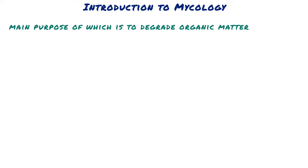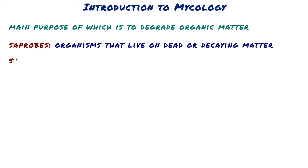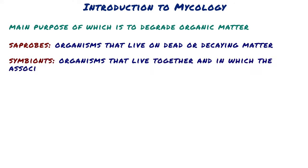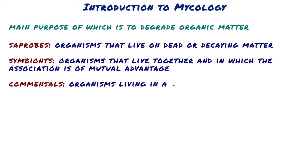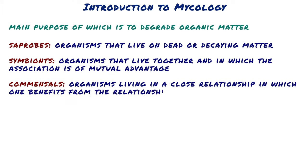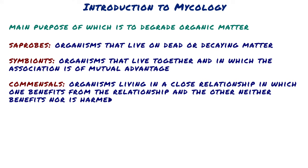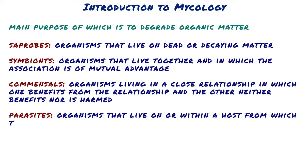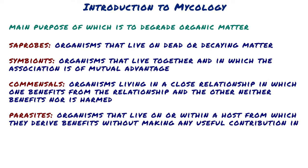All fungi lead a heterotrophic existence as saprobes — organisms that live on dead or decaying matter — symbionts — organisms that live together in an association of mutual advantage — commensals — organisms living in a close relationship in which one benefits and the other neither benefits nor is harmed — or as parasites, organisms that live on or within a host from which they derive benefits without making any useful contribution in return.